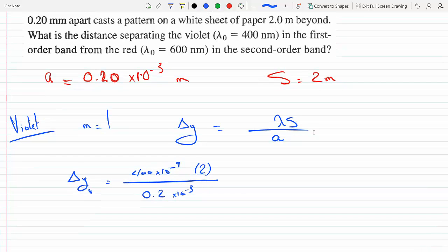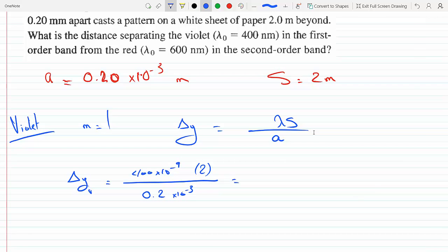So that would give us, if we plug the numbers in—let me do this on the calculator here—it gives us 4 times 10 to the minus 3 meters, or 4 millimeters.